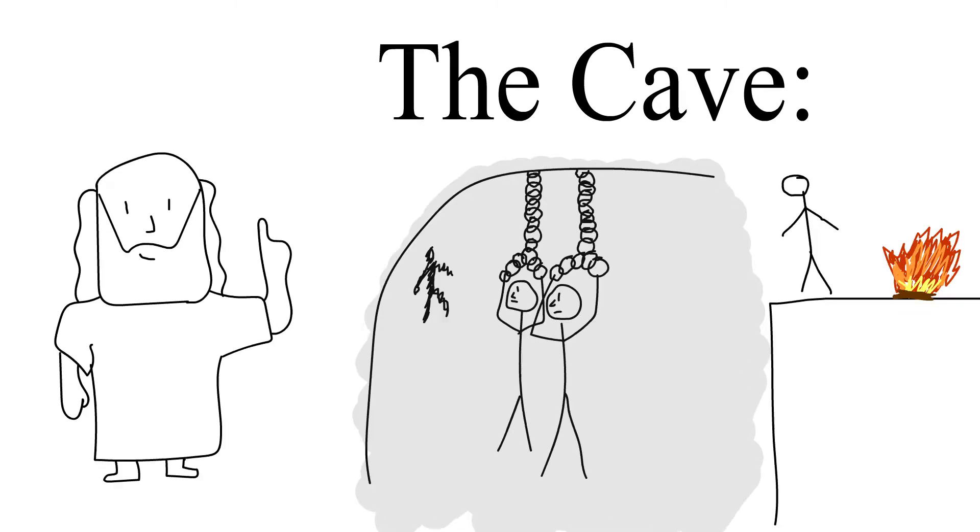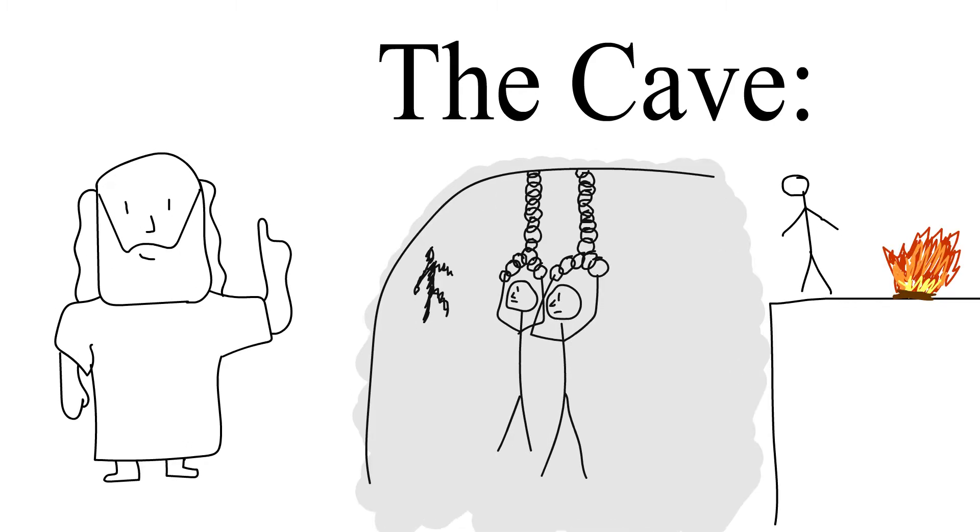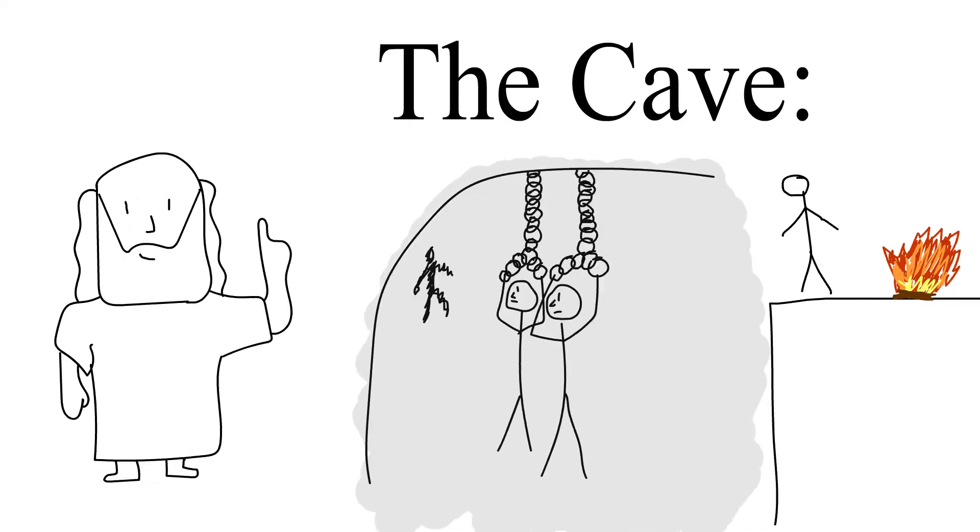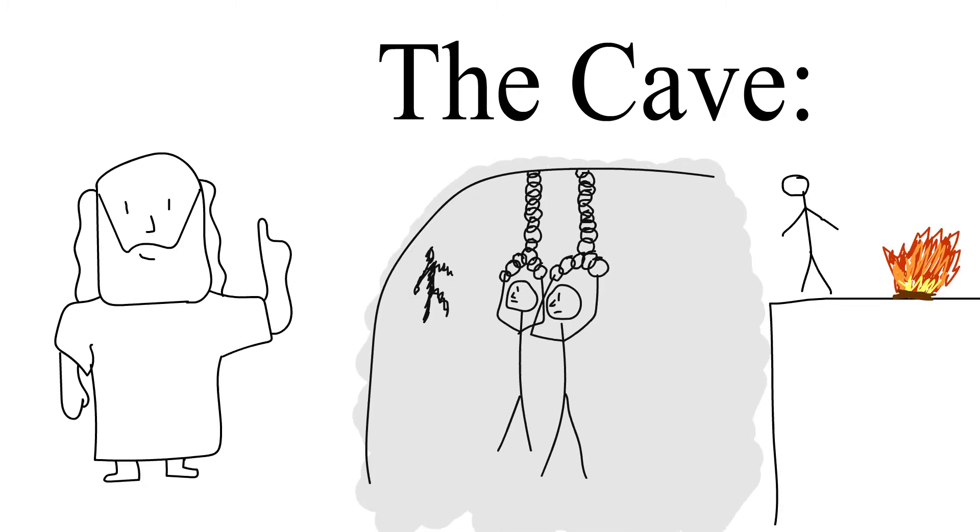This wall shows shadows of the world outside, where there is light from a fire, and in front of this is most commonly puppets and people carrying objects. The prisoners can only see the shadows of these figures and play games based on these, believing these shadows to be reality.